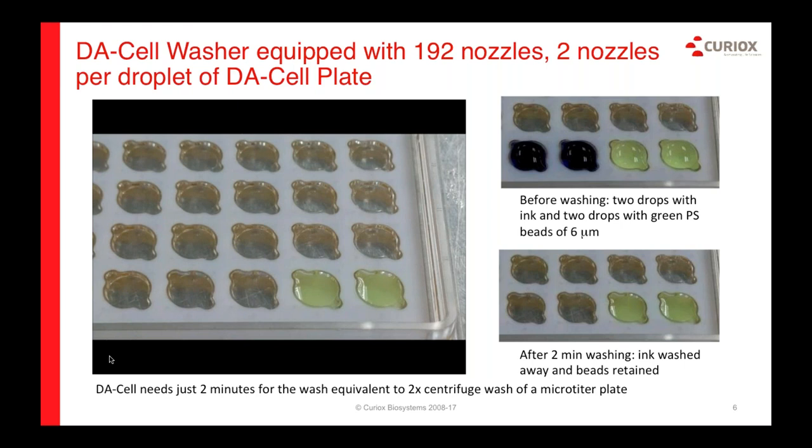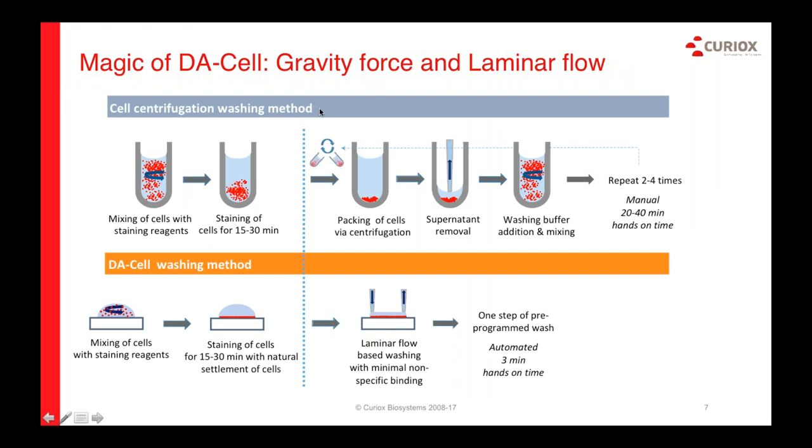When the wash is complete, the plate comes out. In the pictures, you can see that the food coloring solution is completely gone. The food coloring represents tagged antibodies, while the green fluorescent beads — which take the place of cells — are retained on the plate. The beads are not attached to the plate by any interactions, just as cells aren't; they're simply sitting on the plate, held there by gravity without any adhesion.